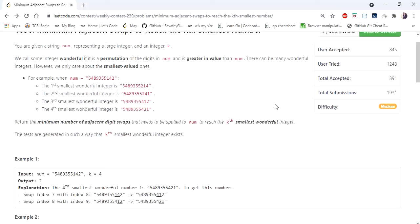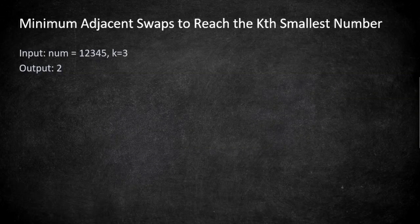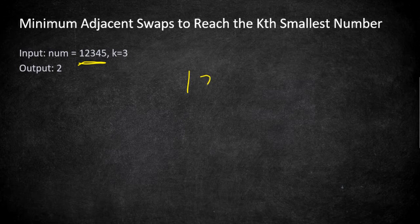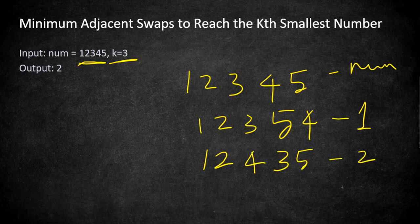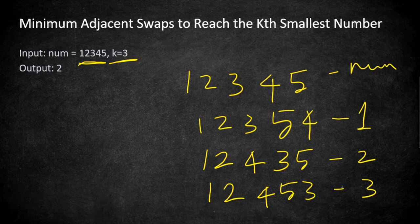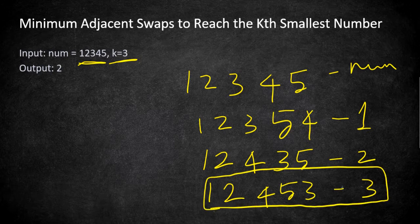Let's understand this problem with a smaller example. A number is said to be wonderful if it is a permutation of the given number num and is greater than num. For example, with 12345, the second wonderful number is 12435, and the third wonderful number is 12453. We need to find how many swaps are required to go from the given number to the kth wonderful number.